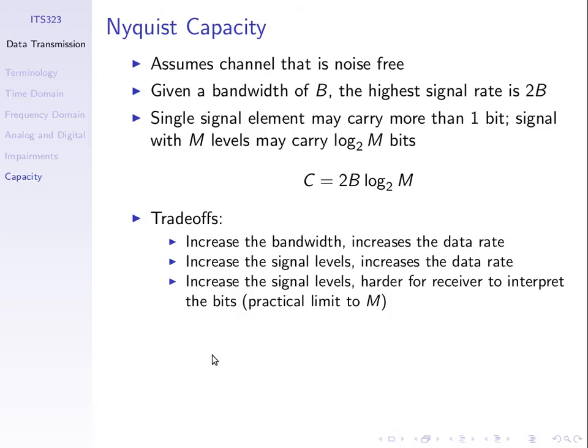We looked at Nyquist capacity, an equation that tells us the relationship between the bandwidth of our communications channel, the number of levels used in the signal to transmit the data, M, and the data rate we can achieve — how many bits per second we can deliver. Increasing the bandwidth increases our data rate. Increasing the number of levels increases the data rate. That's what the equation tells us.